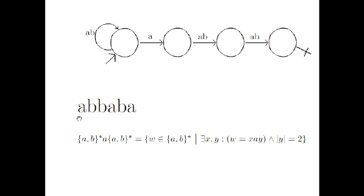Let's see another execution. With the first A we can jump to the second state, with B to the third one, with the next B to the last one. And now, since there are no transitions defined, the rest of the symbols take us nowhere. This is a rejecting execution.